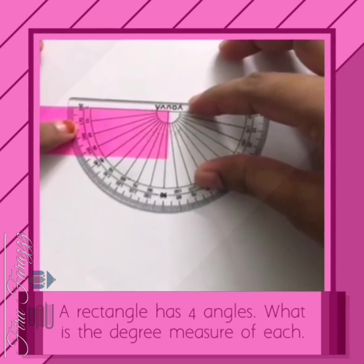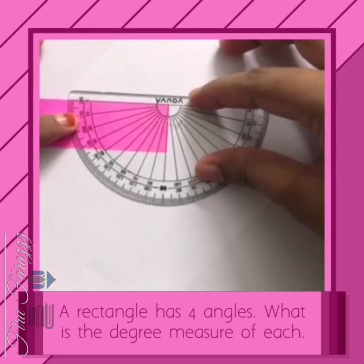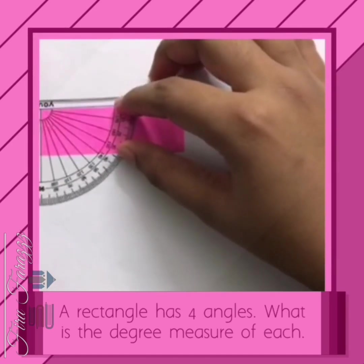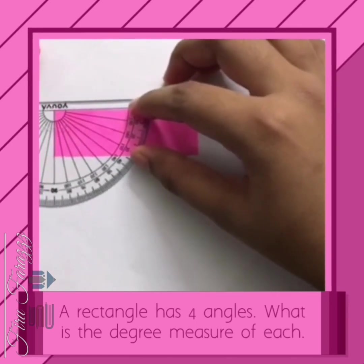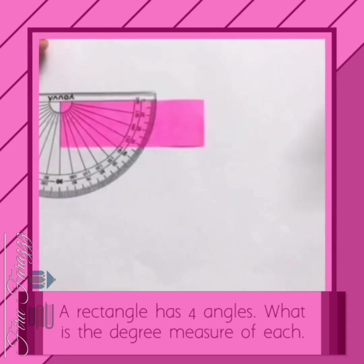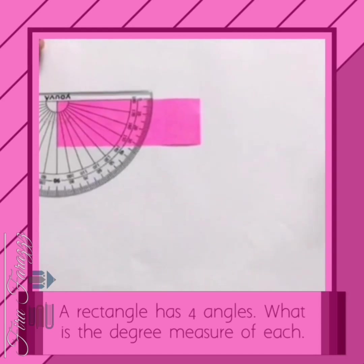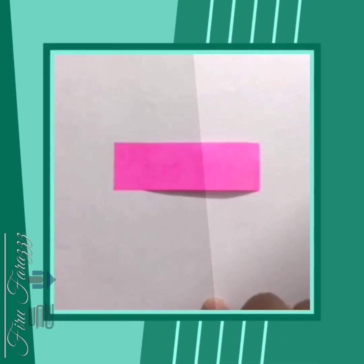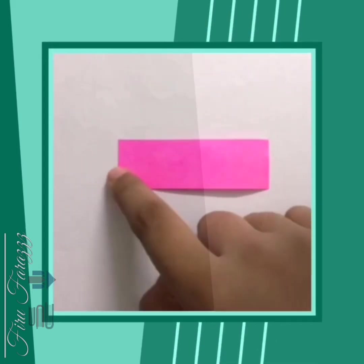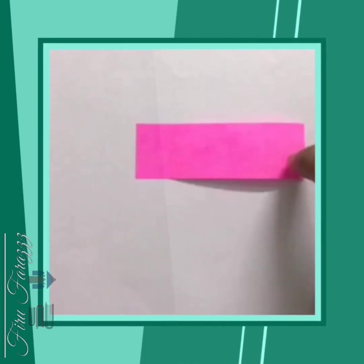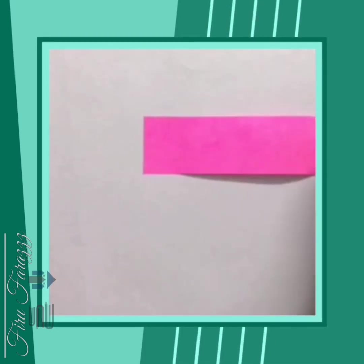The next angle is also 90 degrees. The last and final angle is also 90 degrees and L-shaped. The degree measure of each angle in the rectangle is 90 degrees, and all angles are L-shaped.